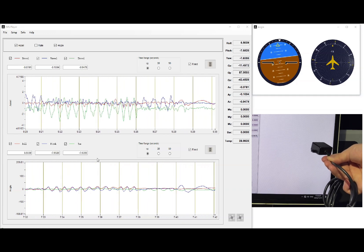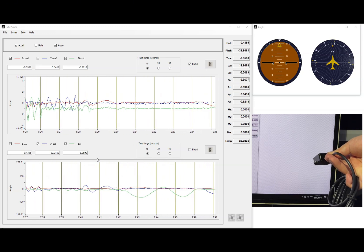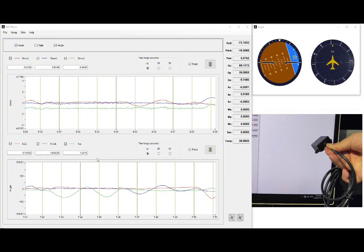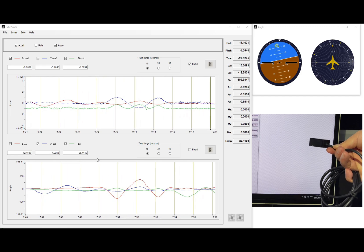Similarly, the components of angular velocity in the pitch, roll, and yaw directions can be seen to change as the module's attitude changes, and the corresponding curves can show the change in value.